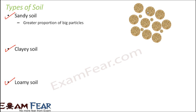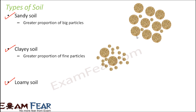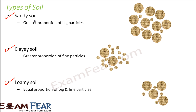Sandy soil has a greater proportion of big particles than small particles. Clayey soil has a greater proportion of fine particles than big particles. Sandy soil is found in the desert — when you touch it, you can feel the presence of big particles. Loamy soil has an equal proportion of big and fine particles.